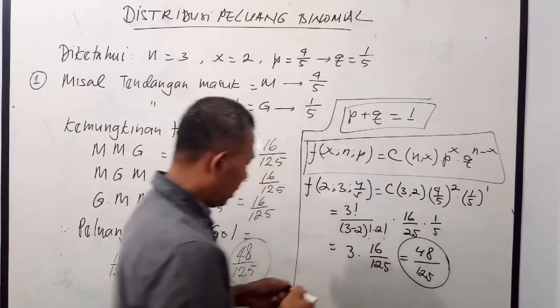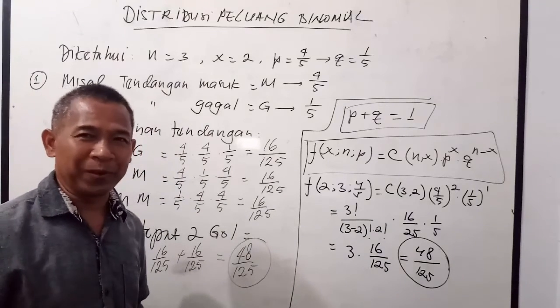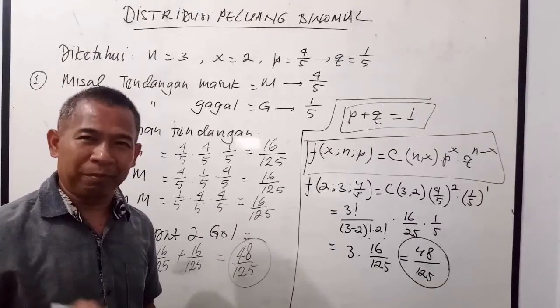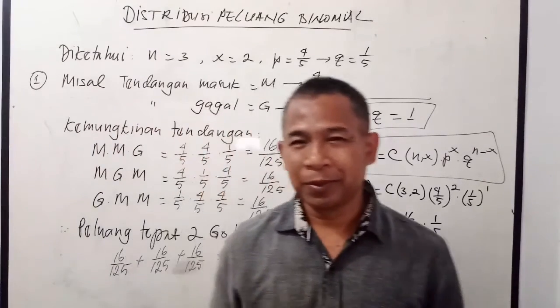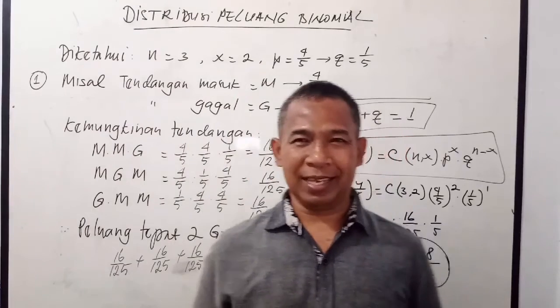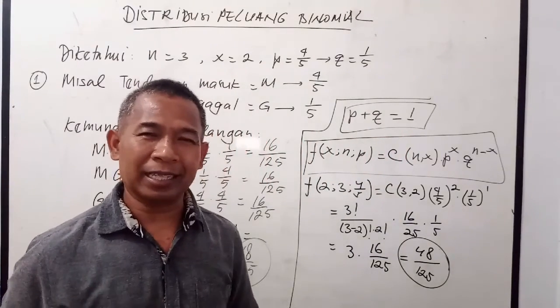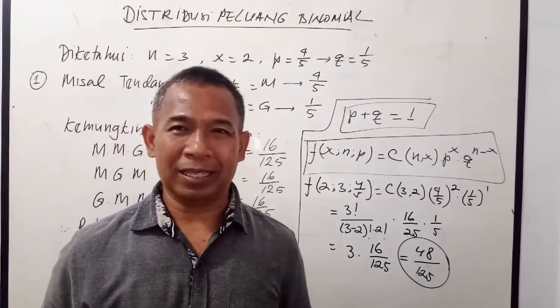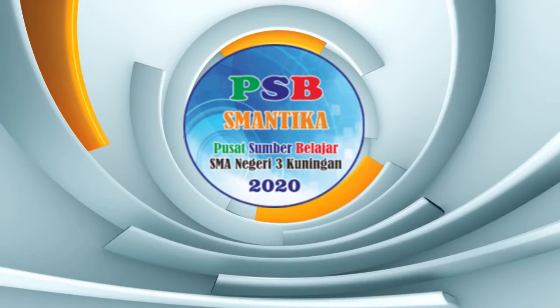Maka hasilnya sama dengan pada saat kita lakukan secara manual. Itulah cara menghitung peluang binomial. Saya ulangi bahwa kejadiannya itu hanya mempunyai dua kemungkinan saja, sukses atau gagal, sehingga dikatakan binomial. Demikian, semoga bermanfaat. Assalamualaikum Warahmatullahi Wabarakatuh.